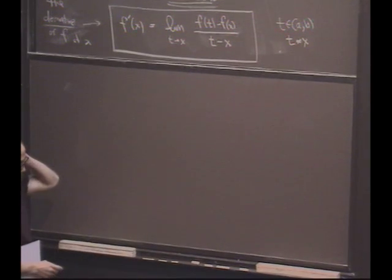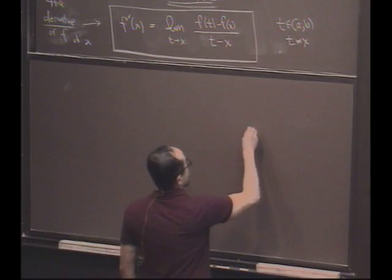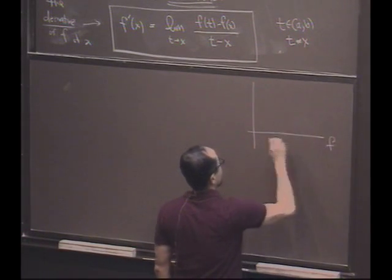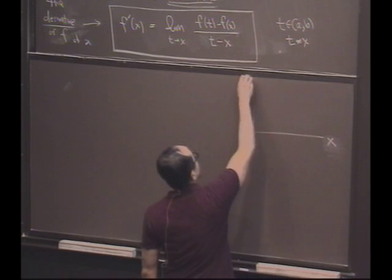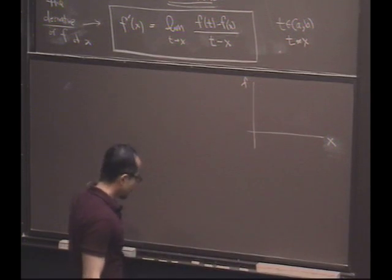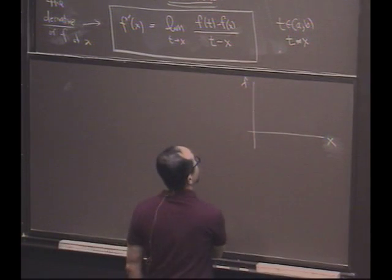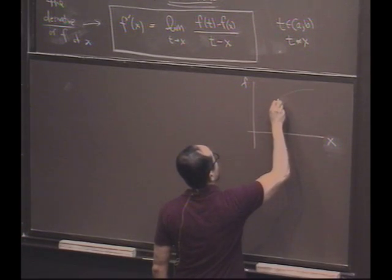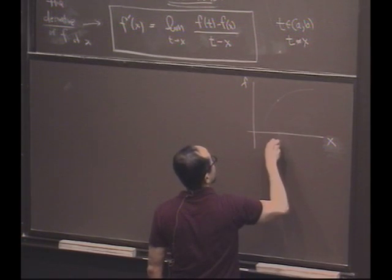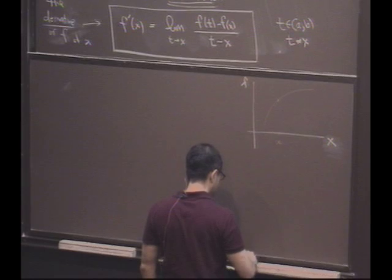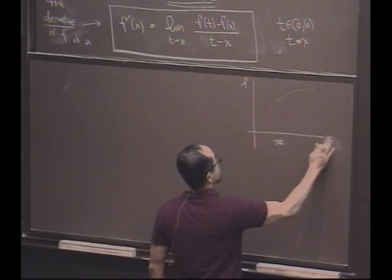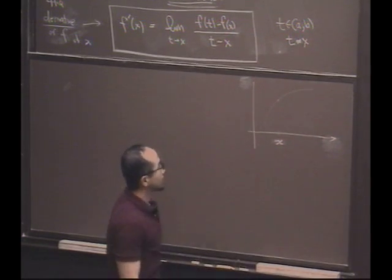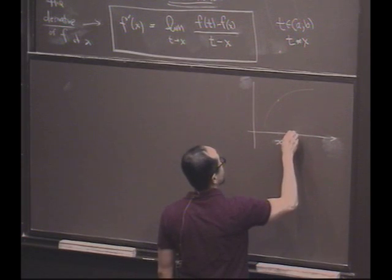So the picture that you might have in your mind is something like the following. If I take the graph of some function, the function might look like so. And I want to understand, let's say, what's happening at a particular point x. This is the x axis. And compare that to what's happening nearby.